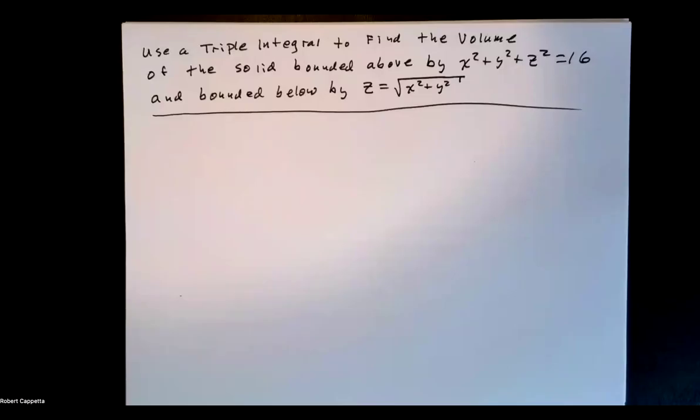Use a triple integral to find the volume of the solid bounded above by x squared plus y squared plus z squared equals 16, and bounded below by z equals the square root of x squared plus y squared.